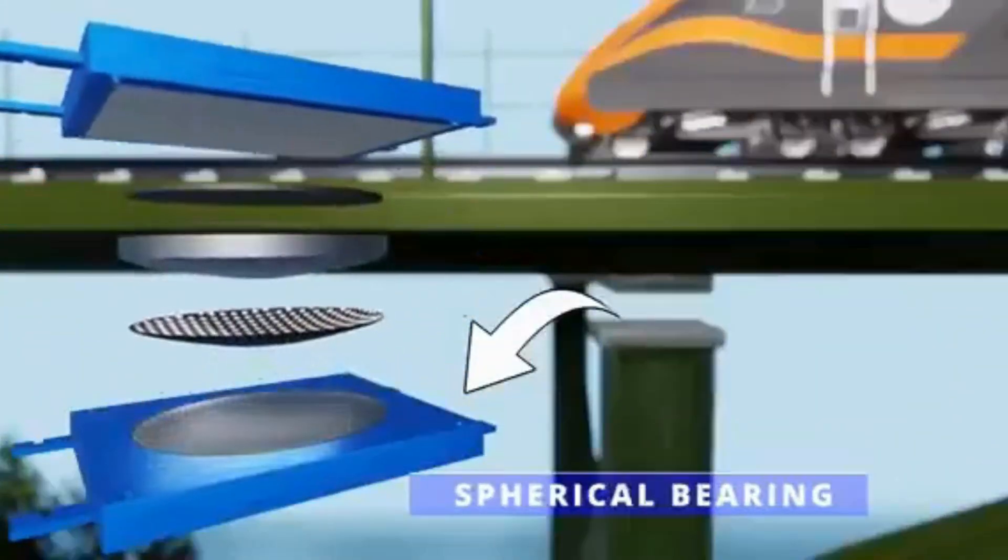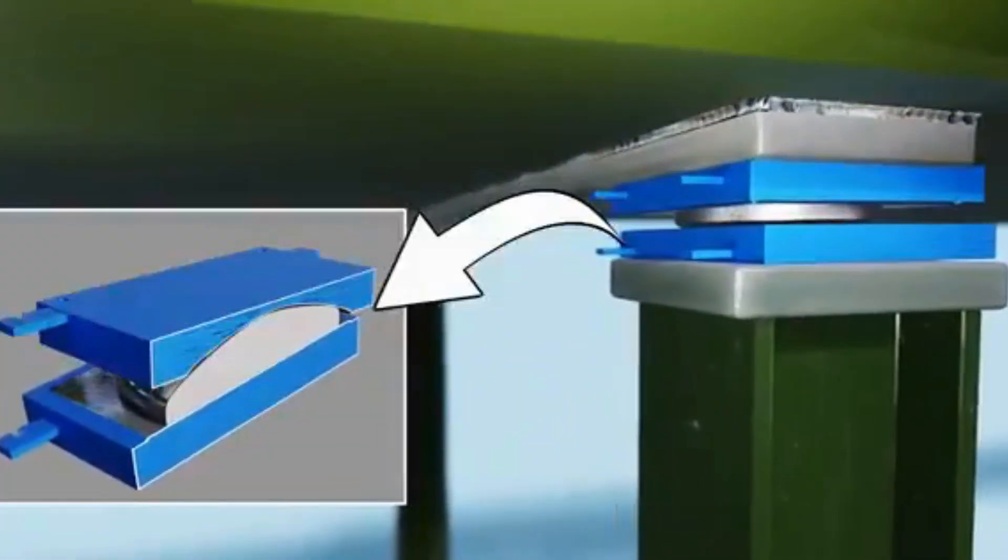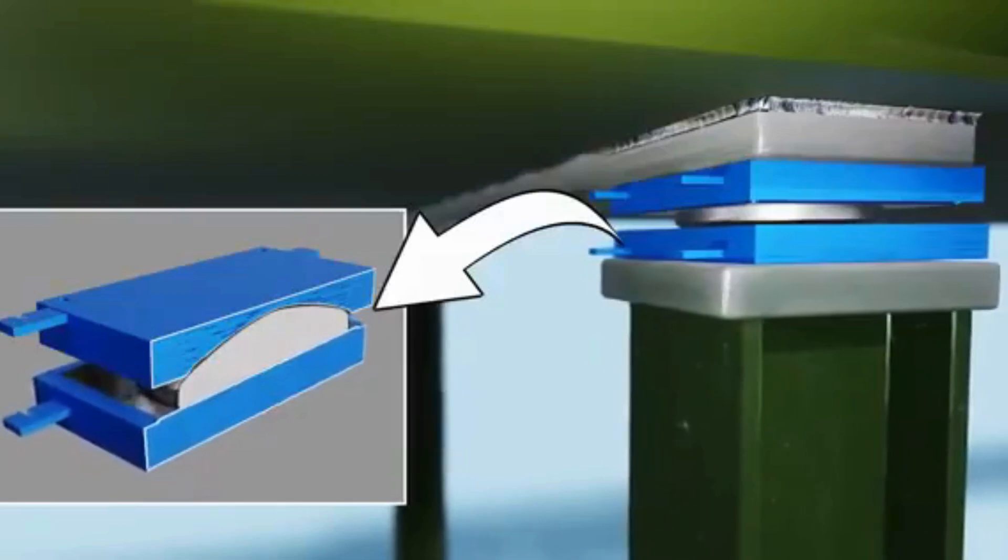The answer lies in the spherical bearings. The lower part of each bearing moves with the ground, but this motion does not transfer to the upper part.